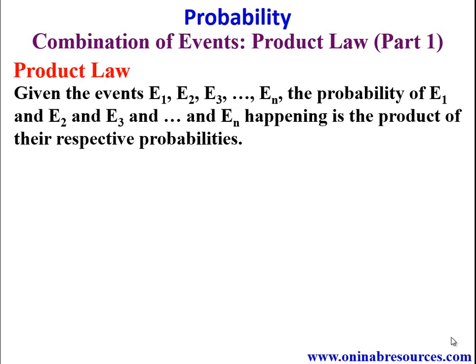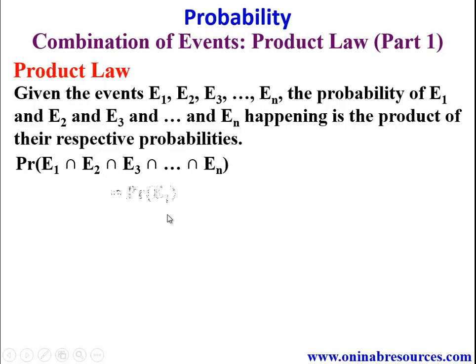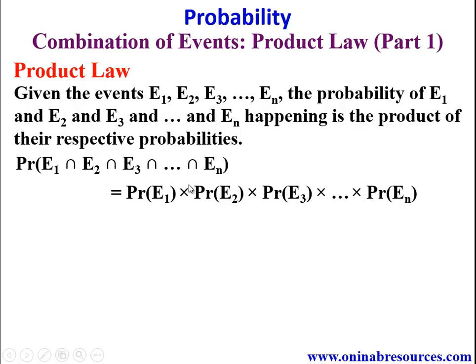First, we need to state the product law. Given events E1, E2, E3 up to En, the probability of E1 and E2 and E3 up to En happening is the product of their respective probabilities. That is, P(E1 ∩ E2 ∩ E3 ∩ ... ∩ En) = P(E1) × P(E2) × P(E3) × ... × P(En). Remember, by set notation, 'and' is intersection, and intersection corresponds to multiplication in probability.